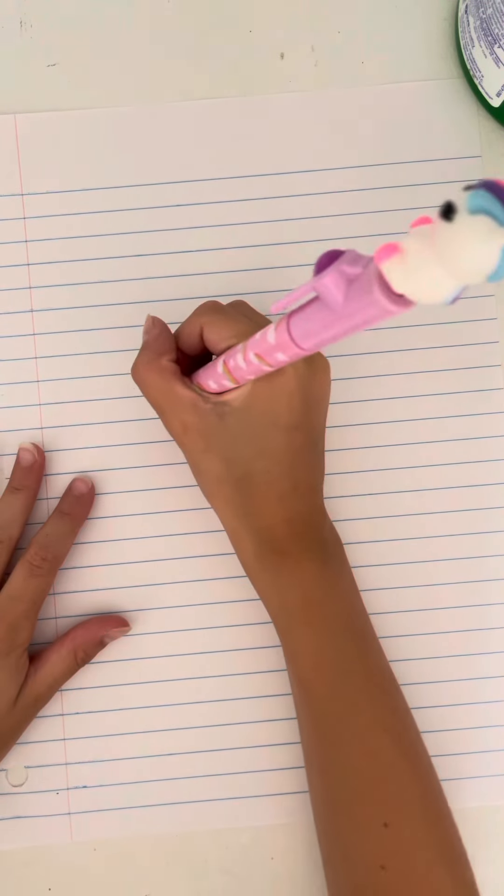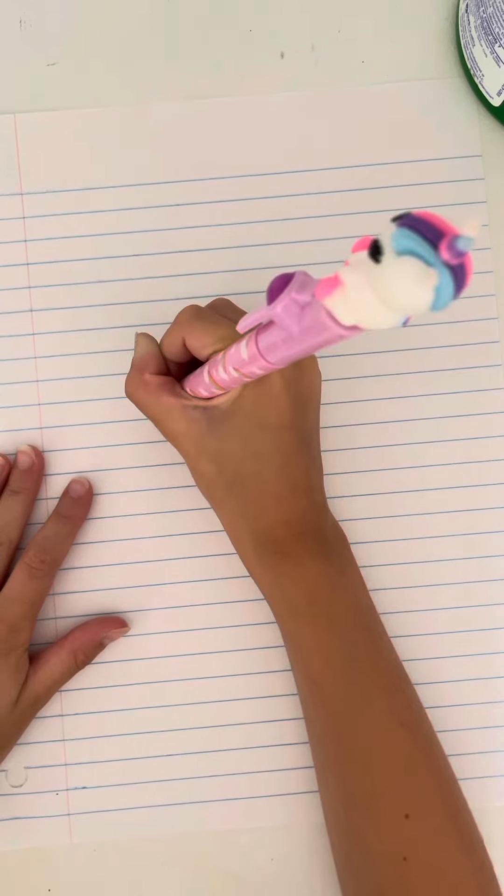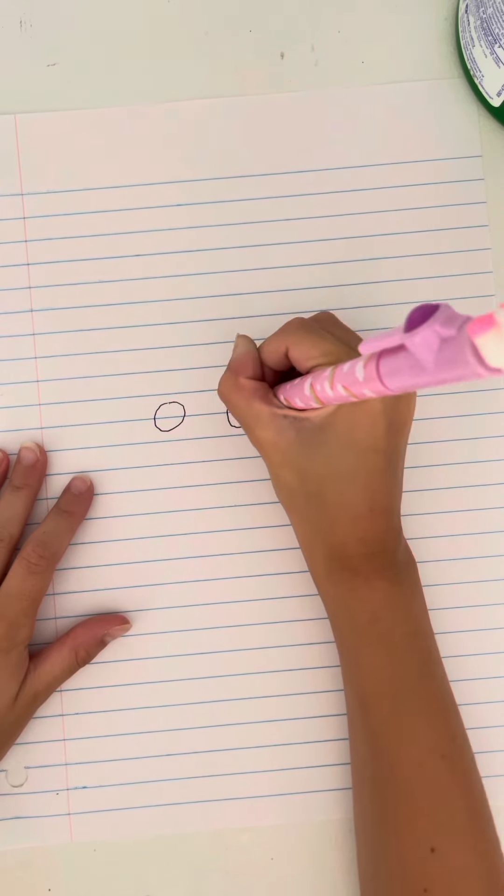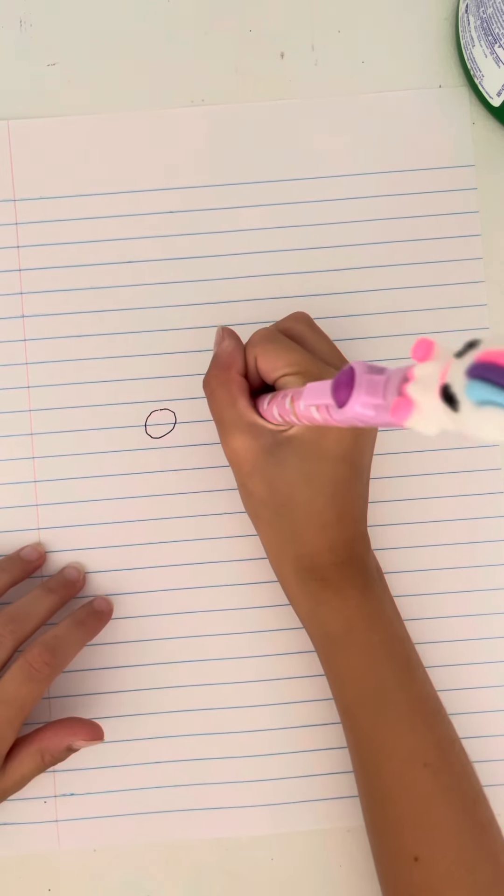Hello guys, today we are going to be drawing this unicorn squishmallow. Okay, so let's get started. First we're gonna draw two medium or big circles. You could do how big or small circles.